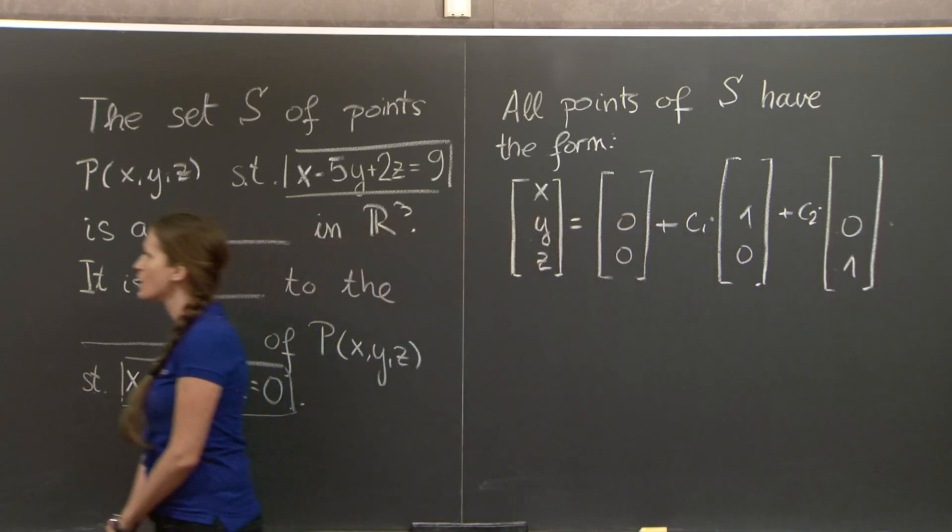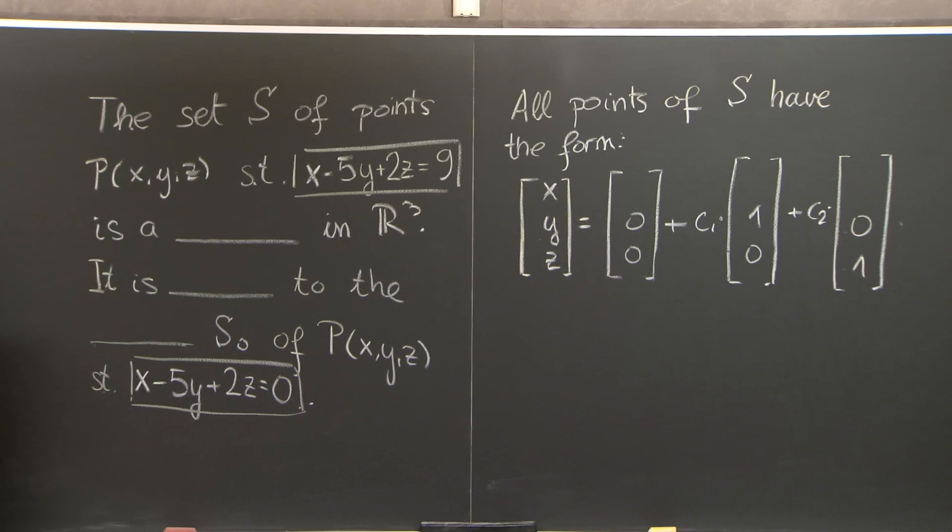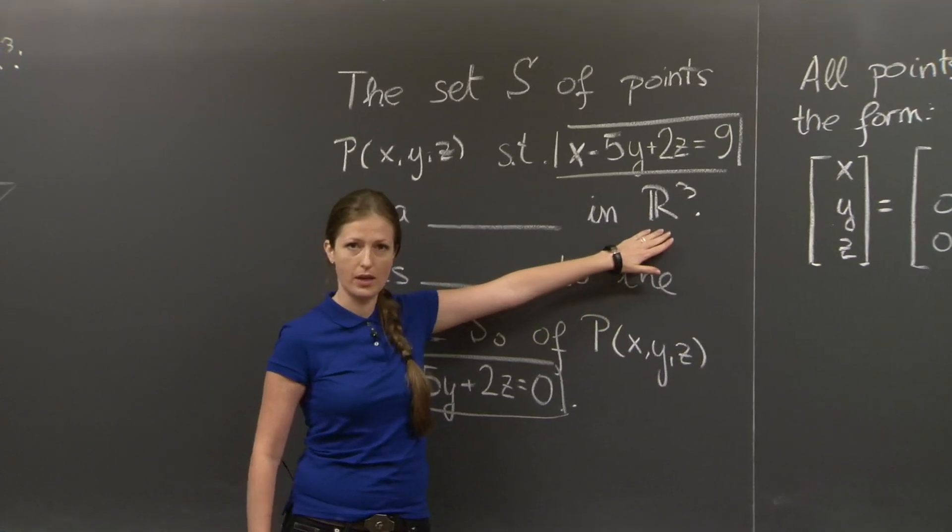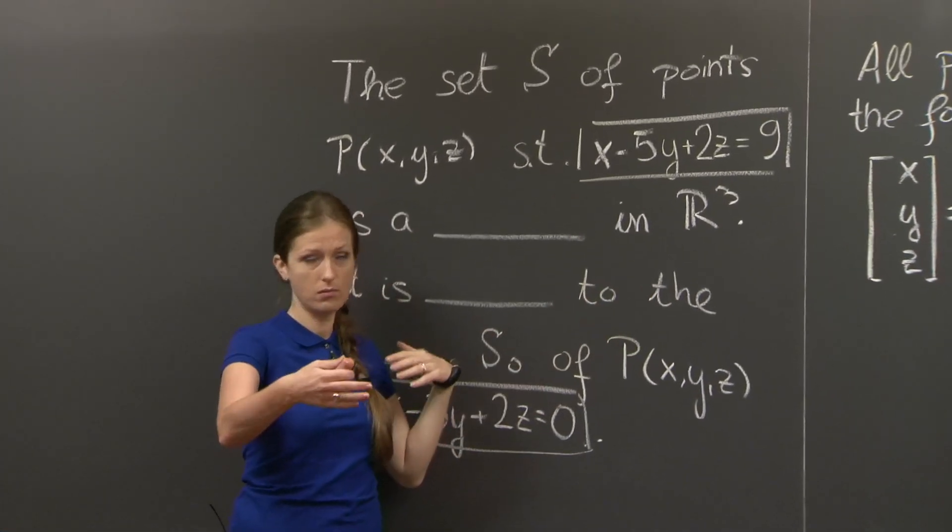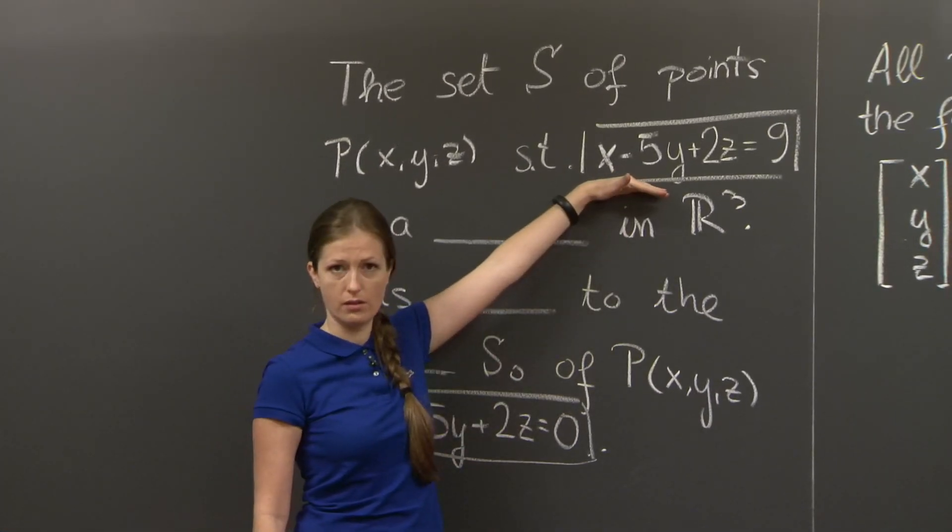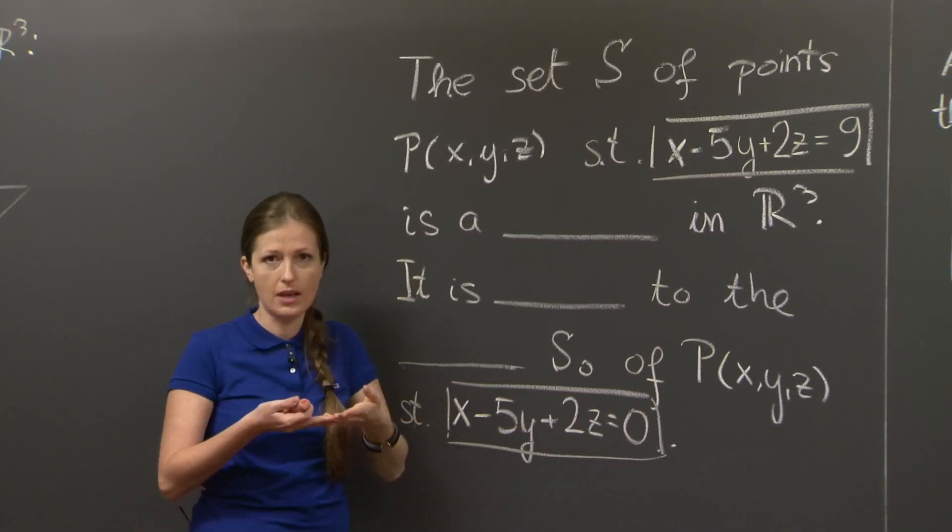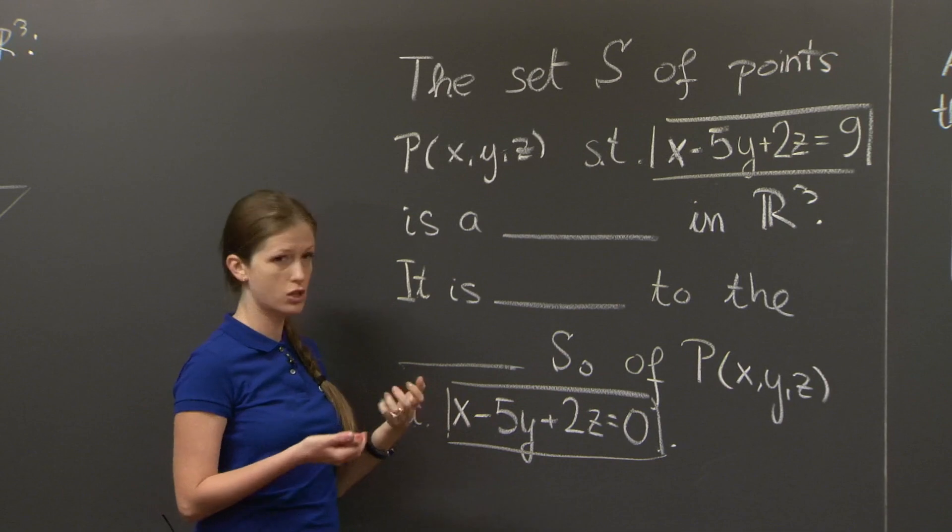And we're back. So you probably picked this up in lectures already. If you have a three dimensional space with three degrees of freedom and put in one constraint, one equation, you get something that has two degrees of freedom, something that's two dimensional.